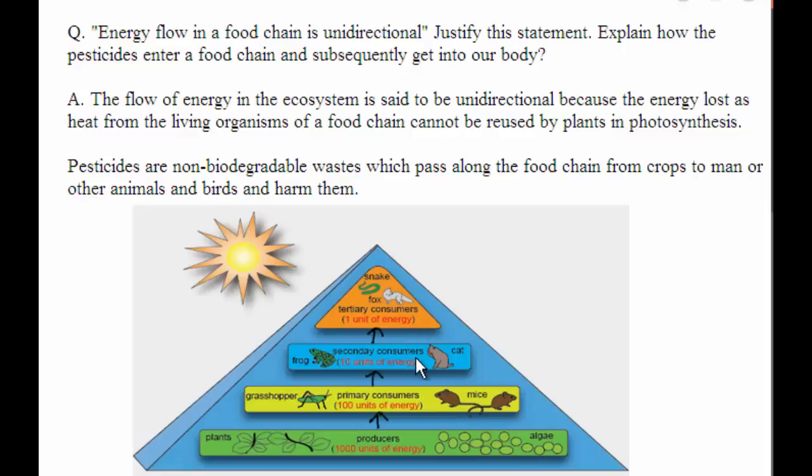Why is it unidirectional? Because the energy lost as heat from the living organisms of a food chain cannot be reused by plants in photosynthesis. You can see in this figure, for example,